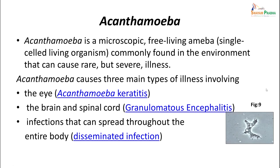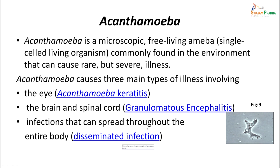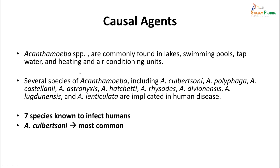Another important amoeba is Acanthamoeba. It is a microscopic free-living single-celled organism commonly found in the environment that can cause rare but very severe illness. It can cause three types of illness: infection of the eye, known as Acanthamoeba keratitis; infection of the brain and spinal cord, known as granulomatous encephalitis; or disseminated infection spreading throughout the body. Causal agents include Acanthamoeba species commonly found in lakes, swimming pools, tap water, and heating and air conditioning units. Several species infect humans, including A. culbertsoni and A. polyphaga, with seven species known to infect humans.